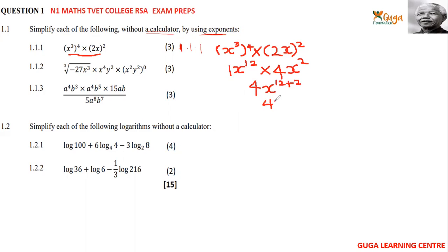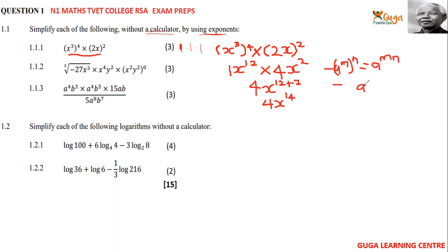You get 4X to the power of 14. The rule used here is: a to the power of m multiplied by a to the power of n equals a to the power of m plus n — you just add the exponents.